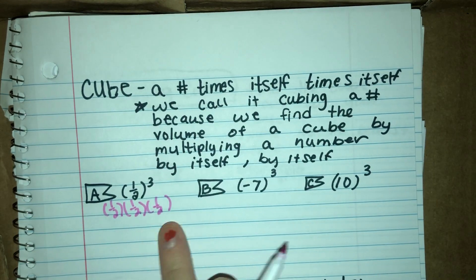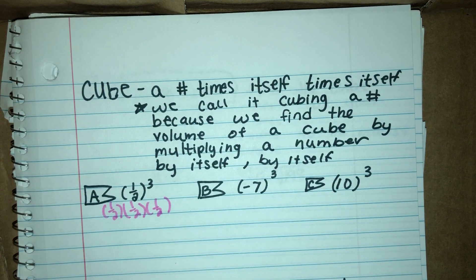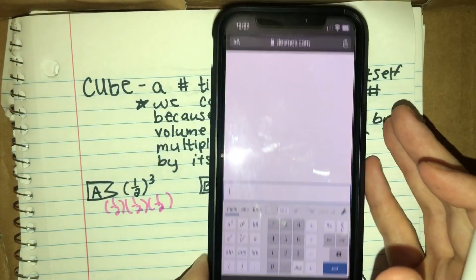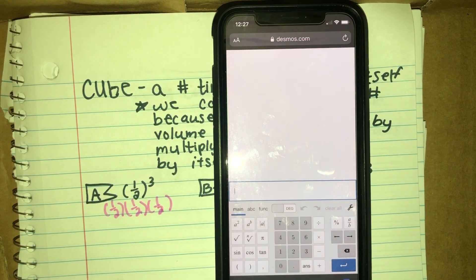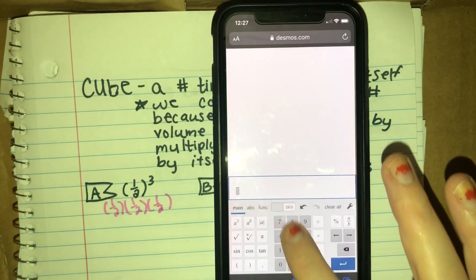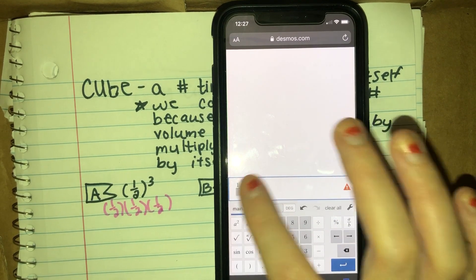You could put it in your calculator like that, or you could have put it in your calculator at this step. Again, I don't have one of your calculators, but I am going to show you the Desmos one. So you could press the fraction button, 1/2...